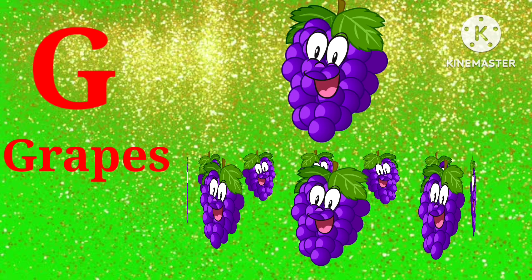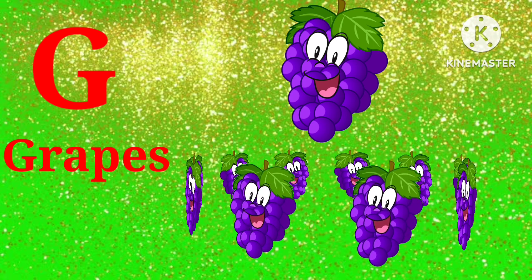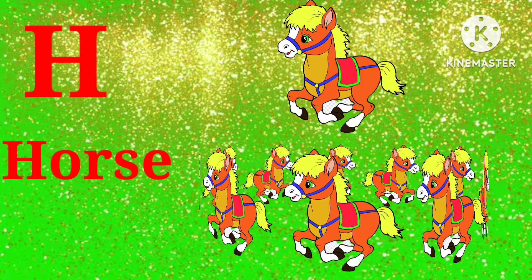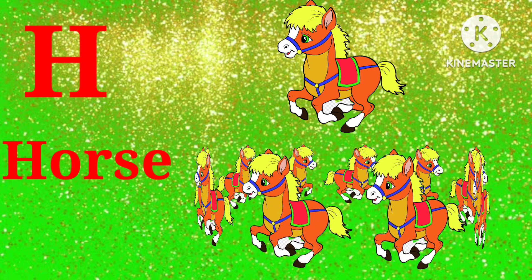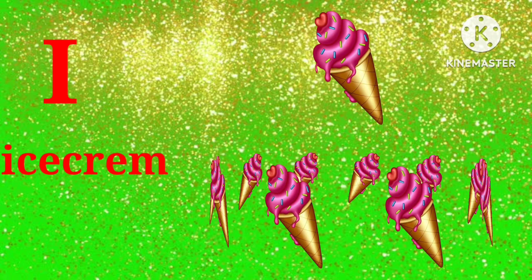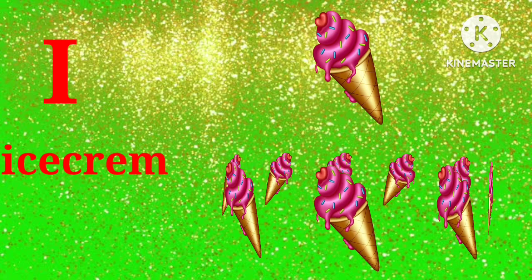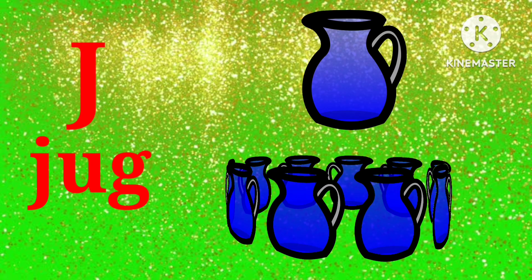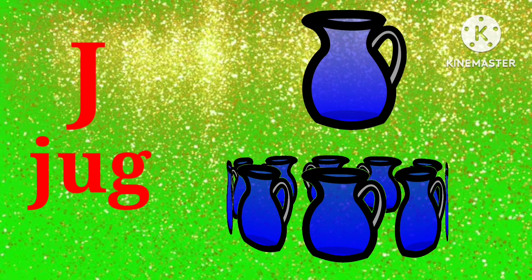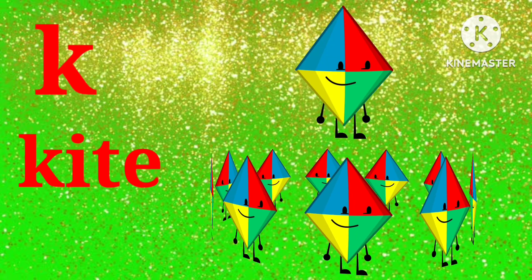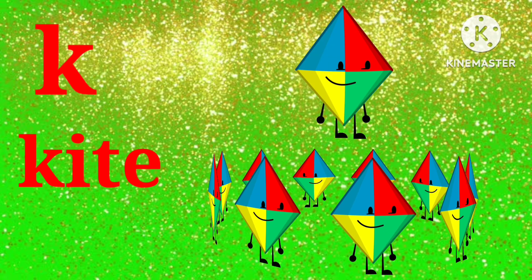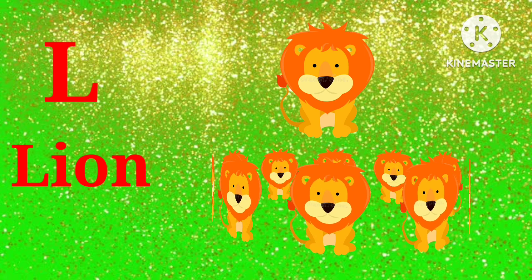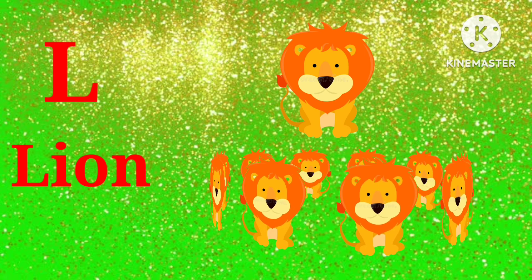G for grabs, H for horse, I for ice cream, J for jug, K for kite, L for lion.